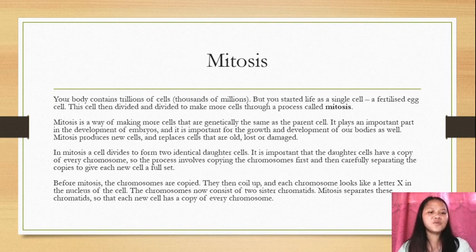In mitosis, a cell divides to form new identical daughter cells. It is important that the daughter cells have a copy of every chromosome, so the process involves copying the chromosomes first and then carefully separating the copies to give each new cell a full set.